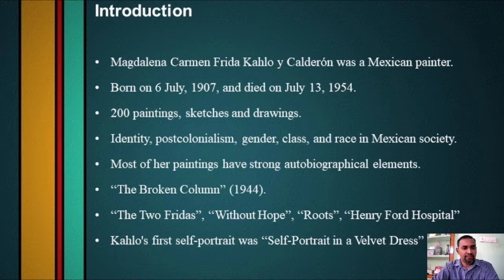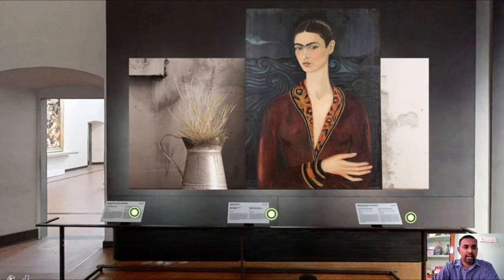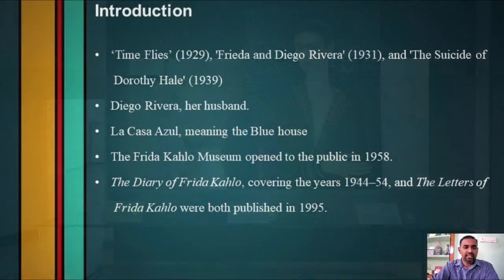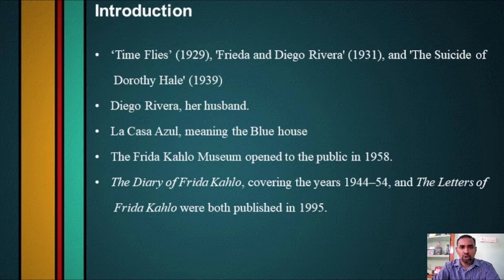Kahlo's first self-portrait, Self-Portrait in a Velvet Dress, was made in 1926. It was painted in the style of 19th century Mexican portrait painters who were greatly influenced by the European Renaissance masters, evident in elongated hands and neck and stylized waves in the background. Her second self-portrait, Time Flies, came out in 1929, in which Kahlo used folk style and vibrant colors. Some other notable paintings include Frida and Diego Rivera, her husband, and The Suicide of Dorothy Hale, made in 1939.